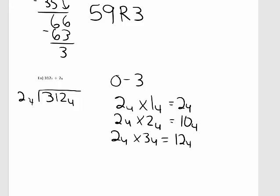2 goes into 3 once. 1 times 2 is 2. Subtract: 3 minus 2 is 1. Bring down the next number, which is a 1. So how many times is 2 base 4 going into 11 base 4? The answer is 2, because 10 base 4 is smaller than 11 base 4, but 11 base 4 is smaller than 12 base 4.